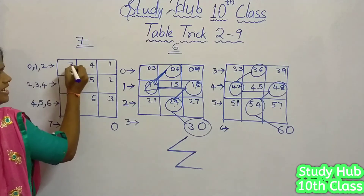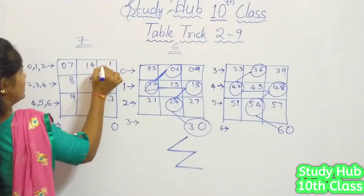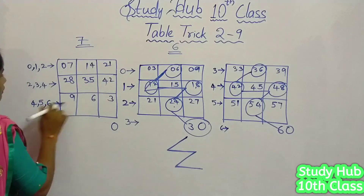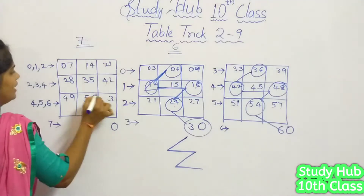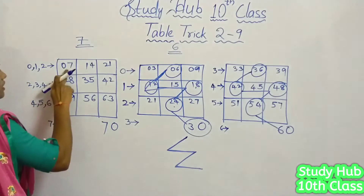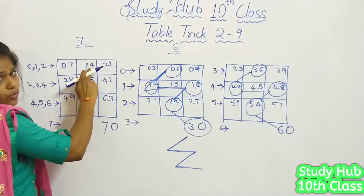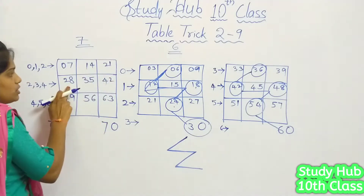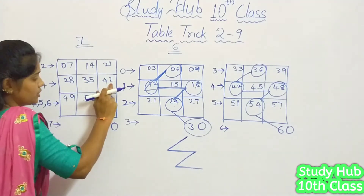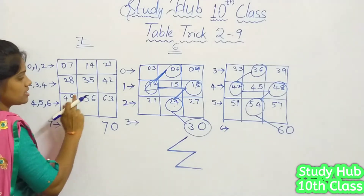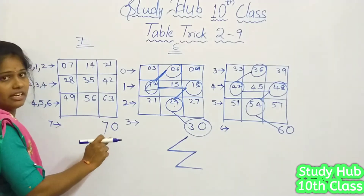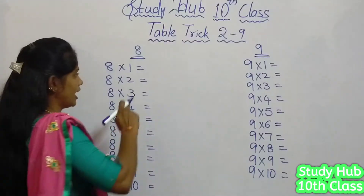Let us write these values: 0, 1, 2; 2, 3, 4; 4, 5, 6; and finally 7. So: 7 ones are 7, 7 twos are 14, 7 threes are 21, 7 fours are 28, 7 fives are 35, 7 sixes are 42, 7 sevens are 49, 7 eights are 56, 7 nines are 63, and 7 tens are 70.